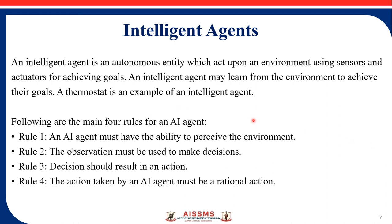An intelligent agent is an autonomous entity which acts upon an environment using sensors and actuators for achieving a goal. An intelligent agent may learn from the environment to achieve its goals. A thermostat or a 3D camera are examples of an intelligent agent.